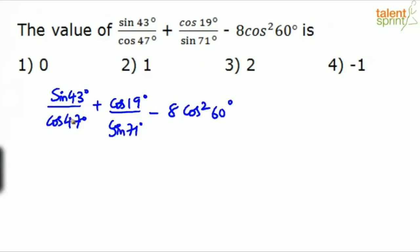Like, for example, cos 47. Cos 47 can be taken as sine 43. I am not writing all the steps this time. Cos 47 is cos of 90 minus 43. Cos of 90 minus theta is sine theta. So sine 43. Similarly, sine 71 can be taken as cos 19. Sine 71 is sine of 90 minus 19. Sine of 90 minus 19 will be cos 19. So now if you look at it, the first term becomes sine 43 by sine 43. Second term is cos 19 by cos 19 minus the third term is 8 cos squared 60.